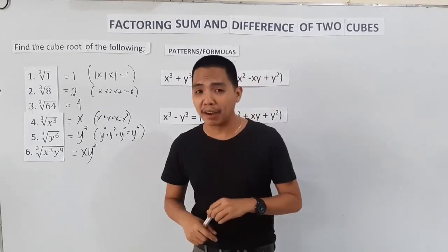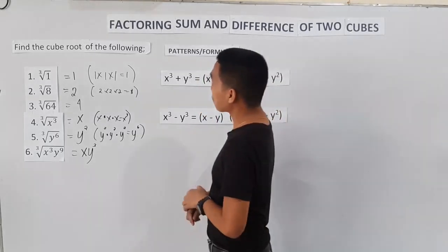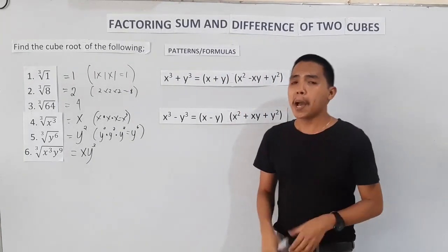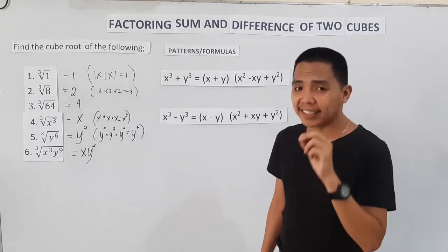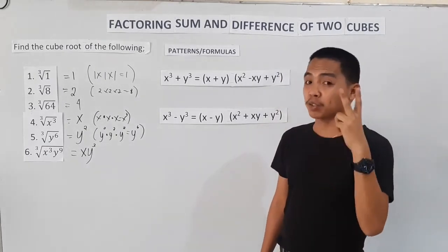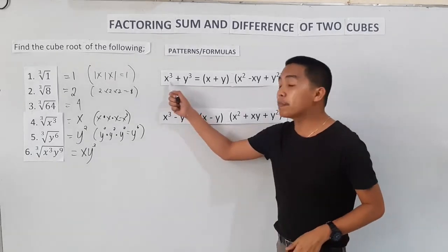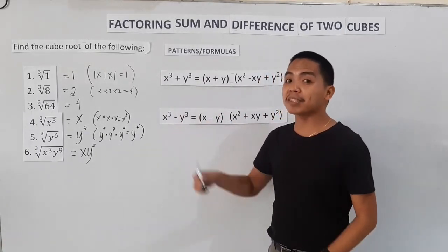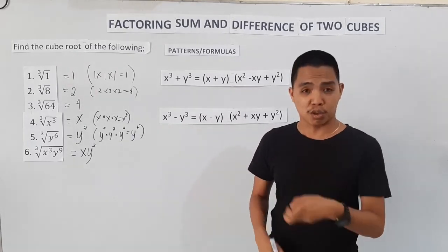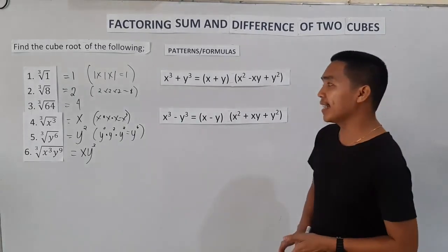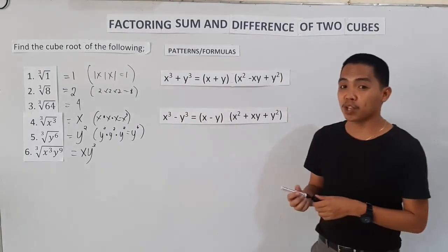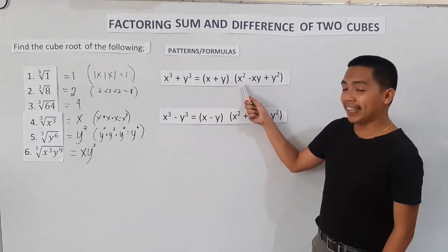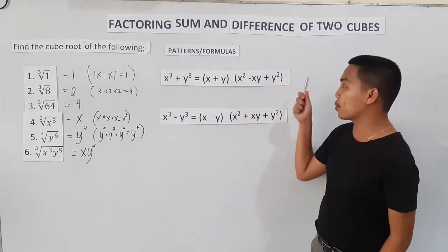There are two types here: the sum of two cubes and the difference of two cubes. A polynomial is said to be a sum or difference of two cubes if it satisfies two conditions. First, the given must always be a binomial. Second, the first and the last terms should be a perfect cube, meaning they should have a whole-number cube root. For x³ plus y³, the pattern or formula gives factors of (x + y) and the trinomial x² minus xy plus y².